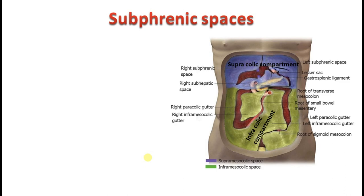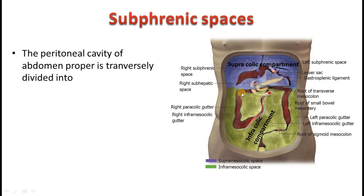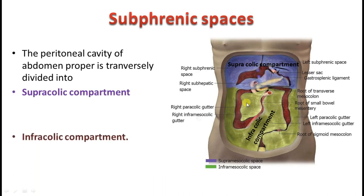Before understanding the subphrenic spaces, note that the whole peritoneal cavity is divided into the supracolic compartment and the infracolic compartment. Supracolic is above the transverse colon and infracolic is below. This categorization is based on the attachment of the transverse mesocolon — the line of attachment of the transverse mesocolon divides the entire peritoneal cavity into supracolic and infracolic compartments. Another vertical division of the peritoneal cavity is into a greater sac and a lesser sac.